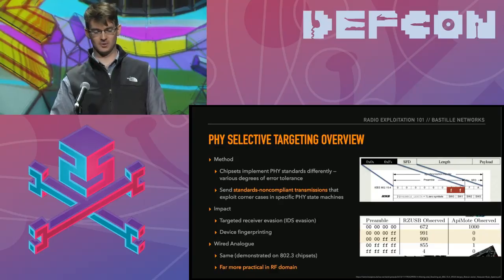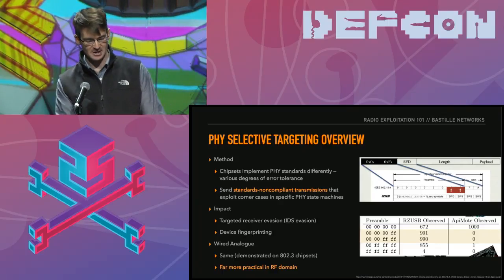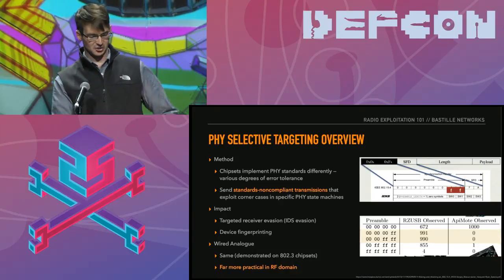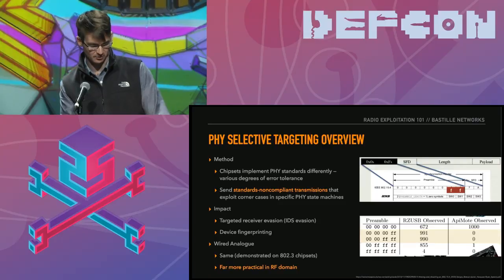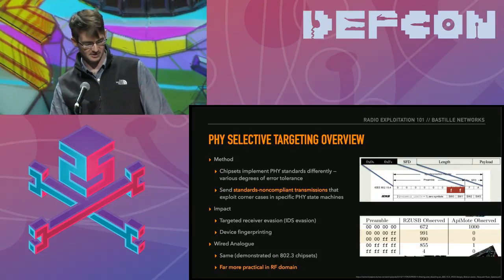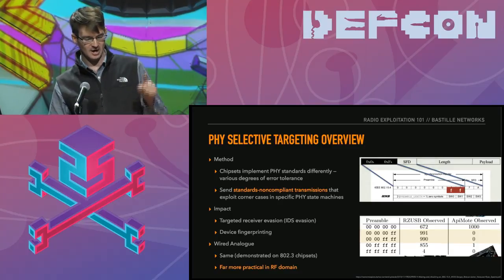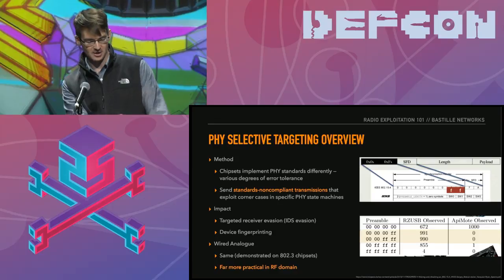One limitation: for this to work, you're counting on network participants being on different chipsets — if they're all on the same chipset they'll all see the same malformed message. In the 802.15.4 receiver evasion demo: I'm using one APIMOTE transmitter to craft variously deformed 802.15.4 messages, and using two different receivers with different chipsets — different state machines — to receive them. On the bottom left we have an Atmel receiver; on the bottom right a TI receiver. Starting with compliant messages, both receive them. Inserting two extra symbols into the header, the RZUSB stick (Atmel) receives it but the APIMOTE (TI) does not. By taking two symbols out of the header, we target the TI radio while avoiding the Atmel radio.